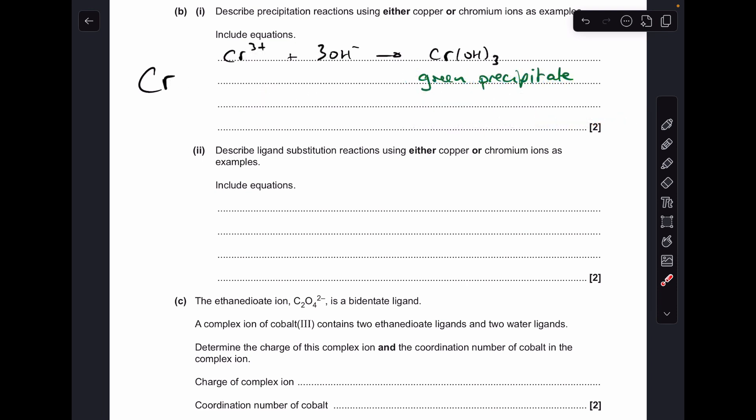And here's the chromium example, just in case you went for that option. I've gone for the simplest version of the equation. So it's chromium 3+ ions with 3 hydroxide ions, giving CrOH3, which is a green precipitate. Or technically it's grey-green in color, but green is totally fine. Again, you could have gone for the reaction with aqueous ammonia, which still gives the same precipitate, but the equation's a bit more complicated.